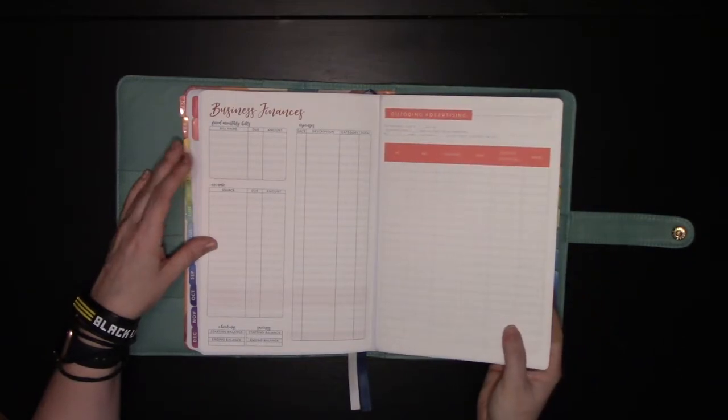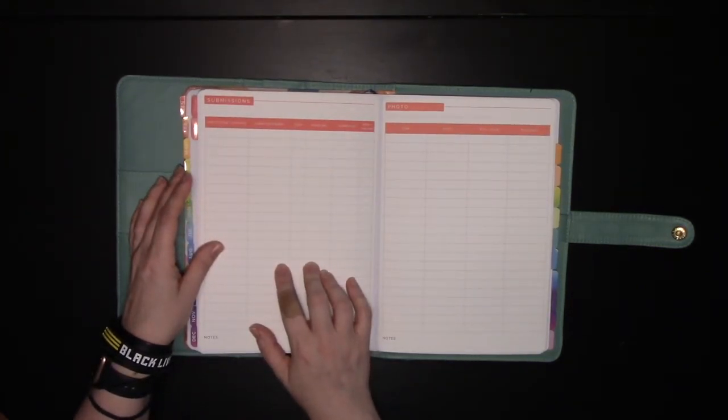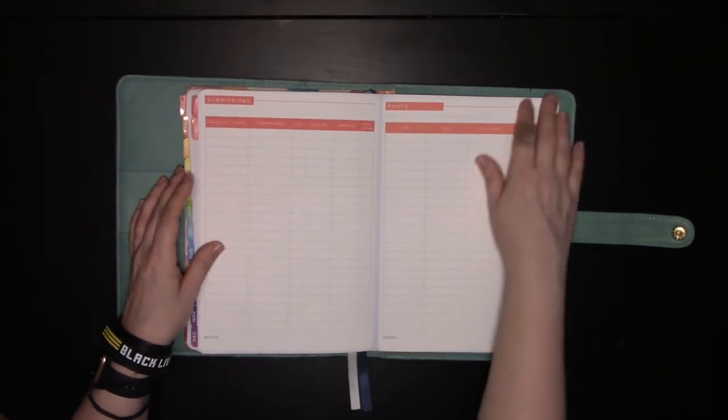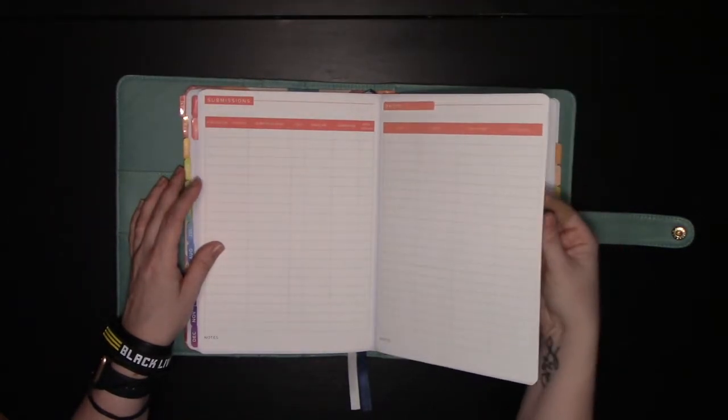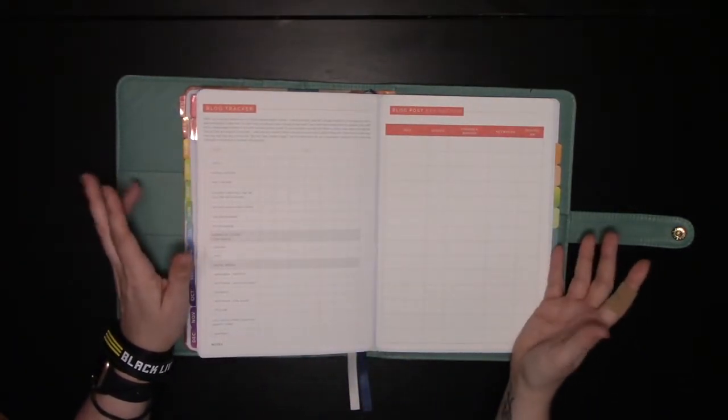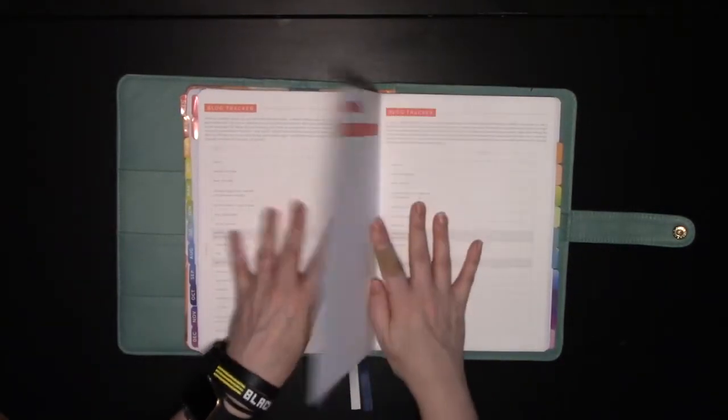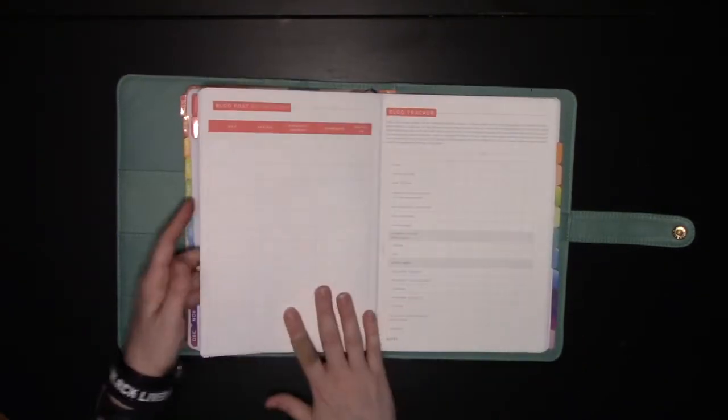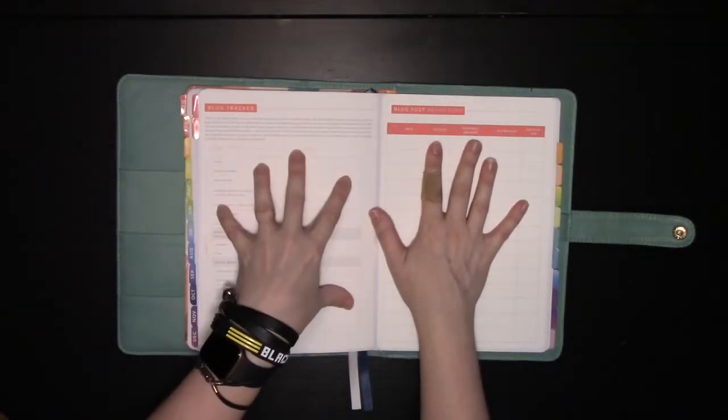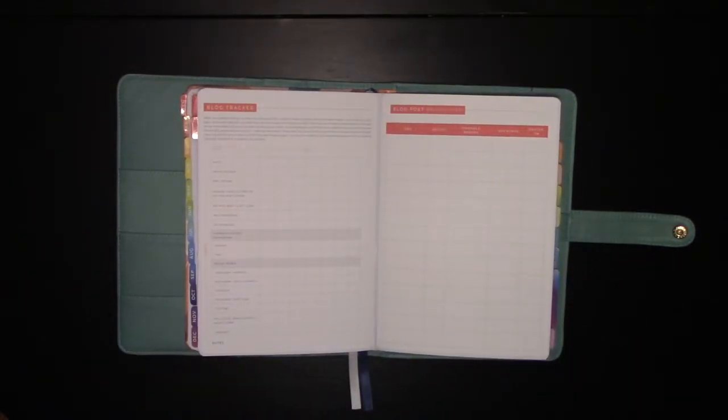Another one, this is part of the Design Aglow bundle that this was from. Submissions so I can track my submissions to magazines for publication. My wish list of things to buy for my business, essentially. Blog tracker and blog post brainstorming. This I screwed up when I was stickering. This should be blog post tracker, blog post tracker here and here. And then brainstorm, brainstorm here and here. So I've decided I'm just going to roll with it. The brainstorm will be for the first six months. And then this brainstorm will go for the next six months. That's how we're going to do this.